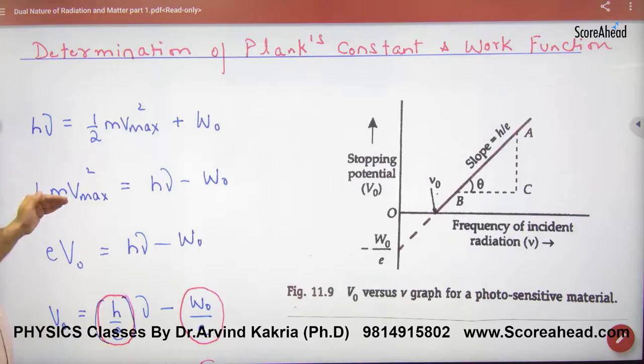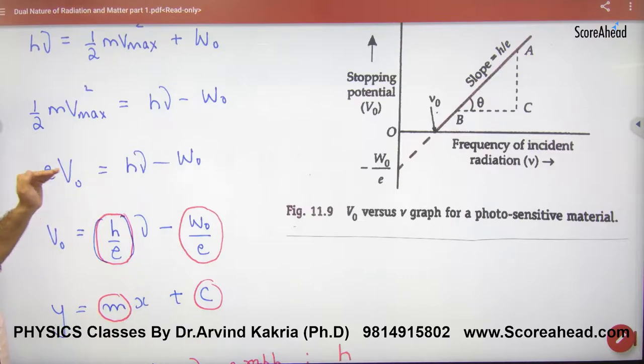Kinetic energy of electron is hν minus work function. Kinetic energy of electron equals eV₀, where V₀ is the retarding potential. We will divide to get the relationship.